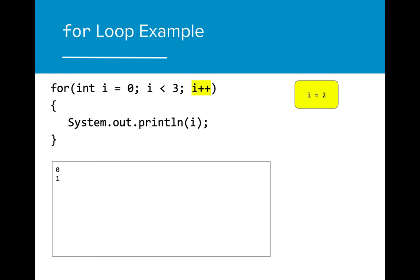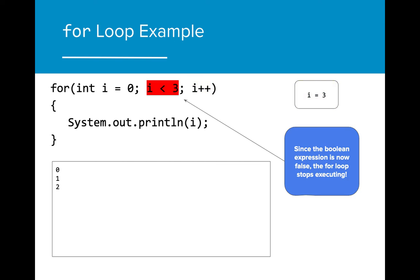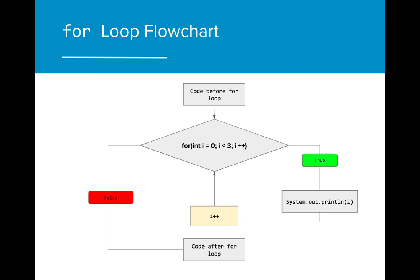Again, the increment is executed and the value of i changes. The Boolean expression is still true, so the for loop executes again. The value of i is then printed to the console and two appears. The increment is executed once more and the value of i increases by one. Now that i is three, the Boolean expression evaluates to false. As a result, the for loop no longer executes and moves to the next line of code following the for loop. Notice that the increment is a built-in component of how the for loop executes its code, and that it occurs at the end of the for loop execution.